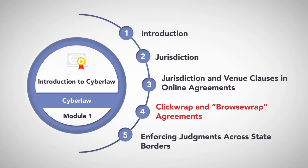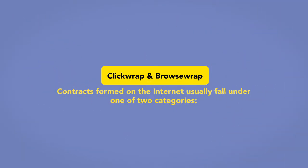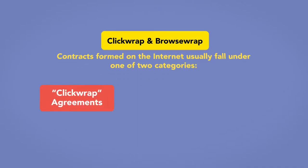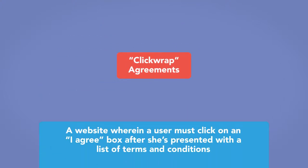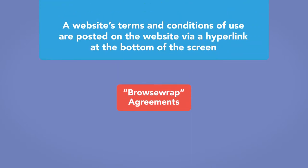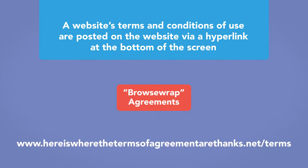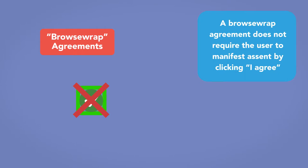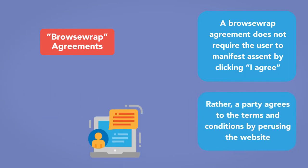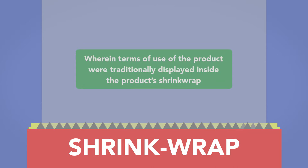Click wrap and browse wrap agreements. Contracts formed on the internet usually fall under one of two categories: click wrap agreements and browse wrap agreements. A click wrap agreement is one where a user must click on an 'I agree' box after being presented with a list of terms and conditions. A browse wrap agreement is where a website's terms and conditions of use are posted on the website via hyperlink at the bottom of the screen and does not require the user to manifest assent by clicking 'I agree' — rather, a party agrees to the terms by perusing the website. Both names are plays on shrink wrap agreements, wherein terms of use were traditionally displayed inside a product's shrink wrap.